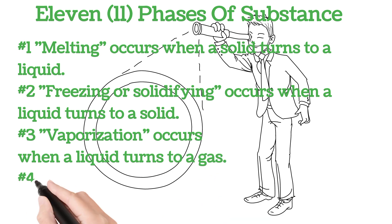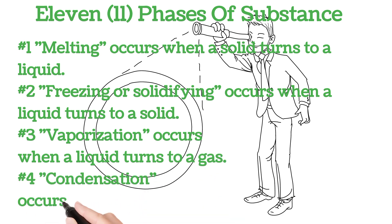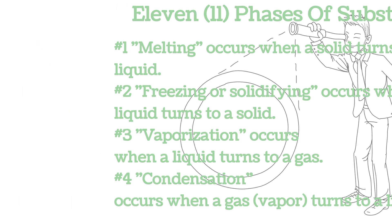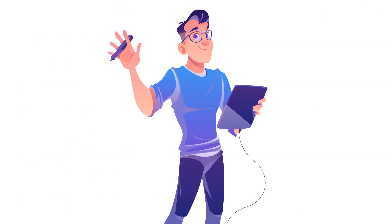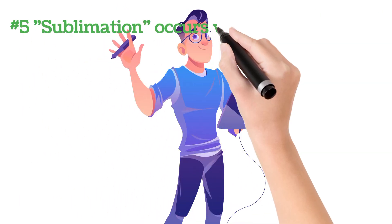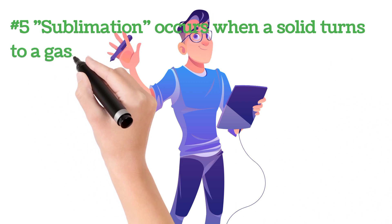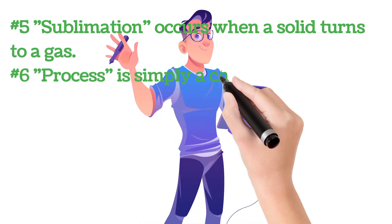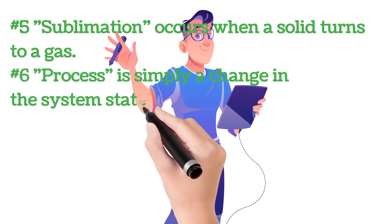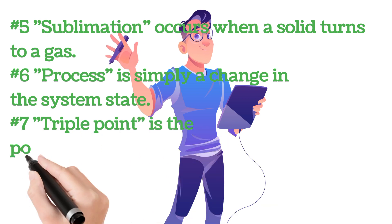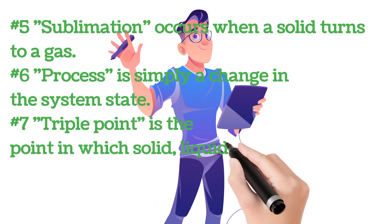Number three: vaporization occurs when a liquid turns to a gas. Number four: condensation occurs when a gas or vapor turns to a liquid. Number five: sublimation occurs when a solid turns to a gas. Number six: process is simply a change in the system state.